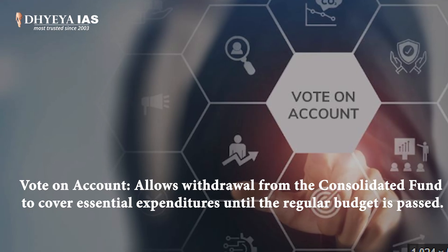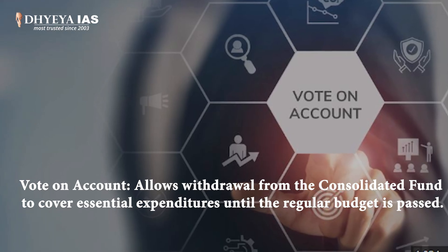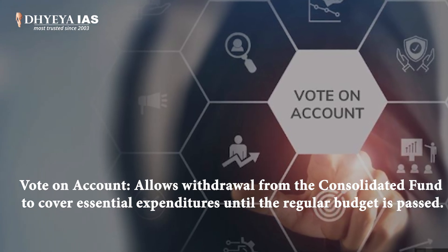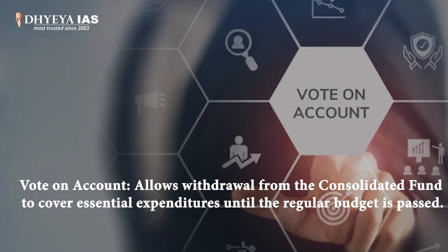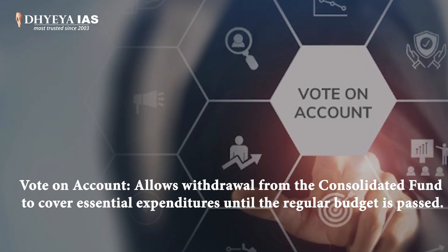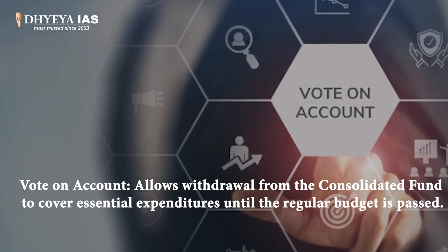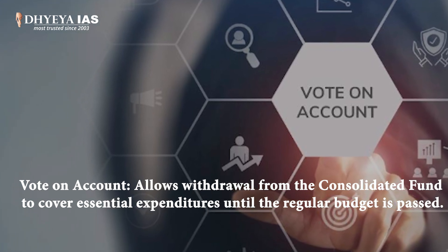The Supplementary Demand for Grants seeks additional funds for unforeseen expenses. The Vote on Account allows withdrawal from the Consolidated Fund to cover essential expenditures until the regular budget is passed.